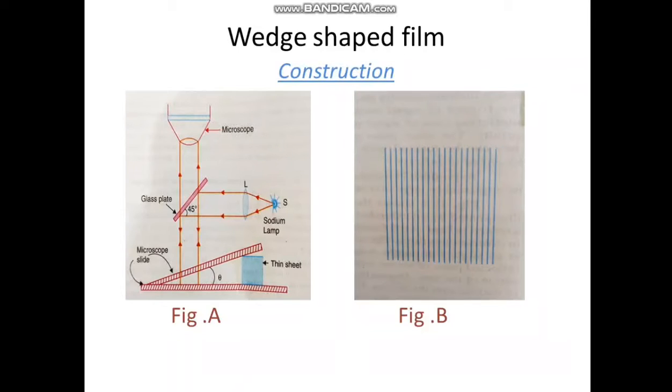a parallel beam of monochromatic light illuminates the wedge from above, then the rays reflected from its two boundaries, or bounding surfaces,